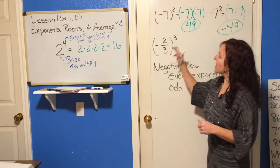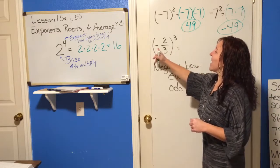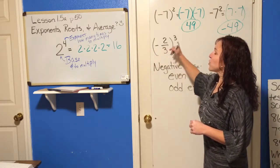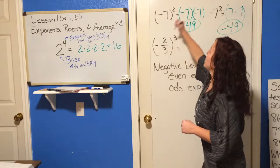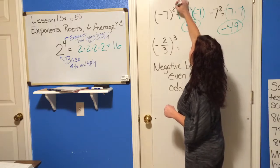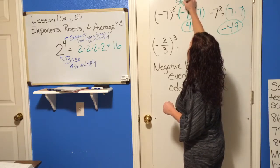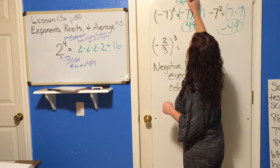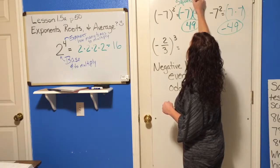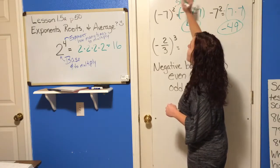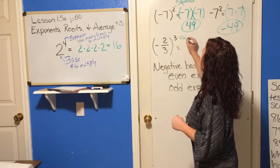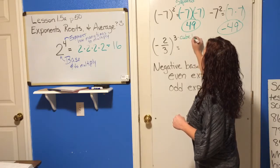So this is negative 7 squared, and that simply means we're going to take negative 7 times itself 2 times. So negative 7 times negative 7 — and a negative times a negative is a positive — so that would be positive 49.